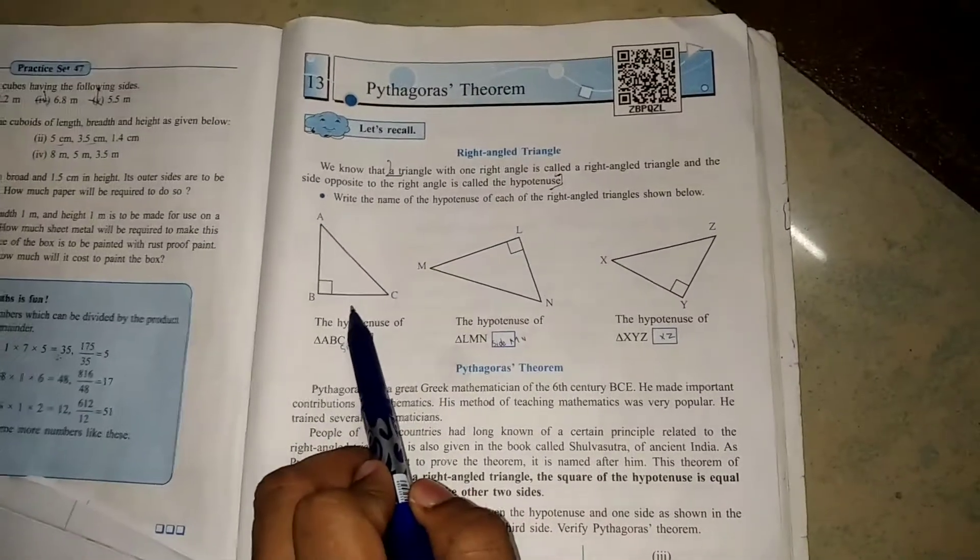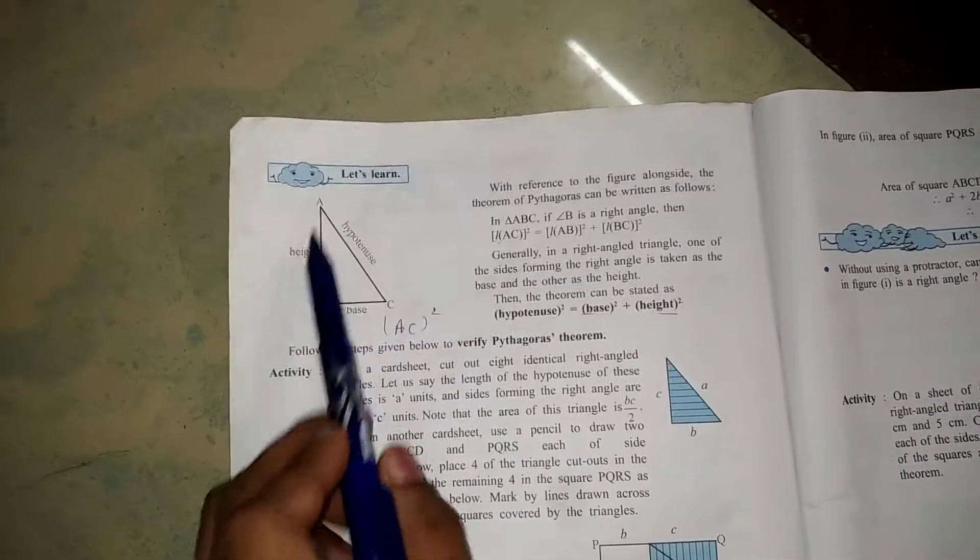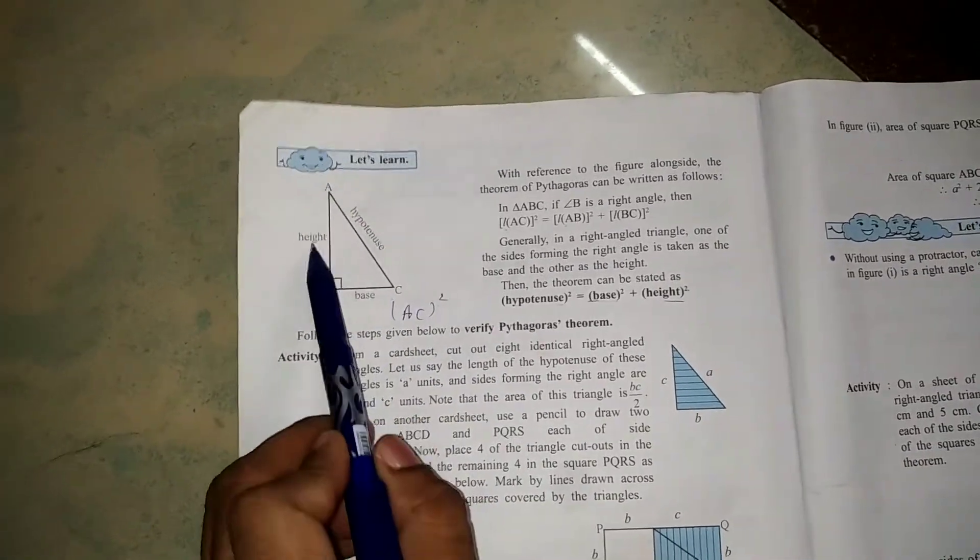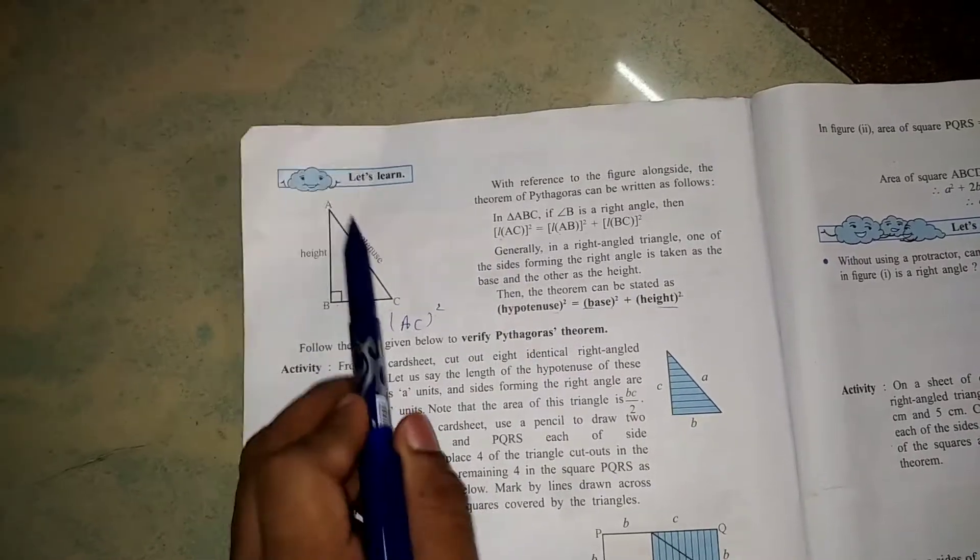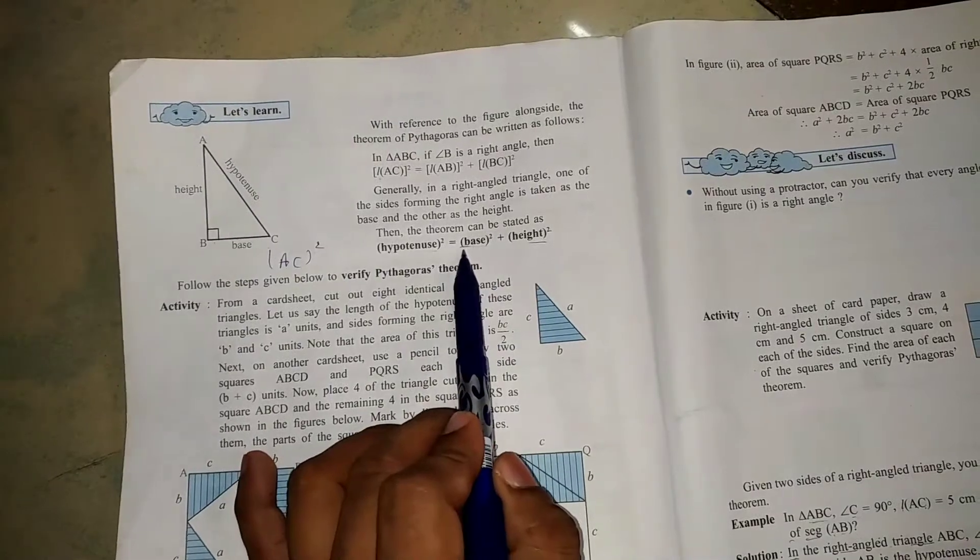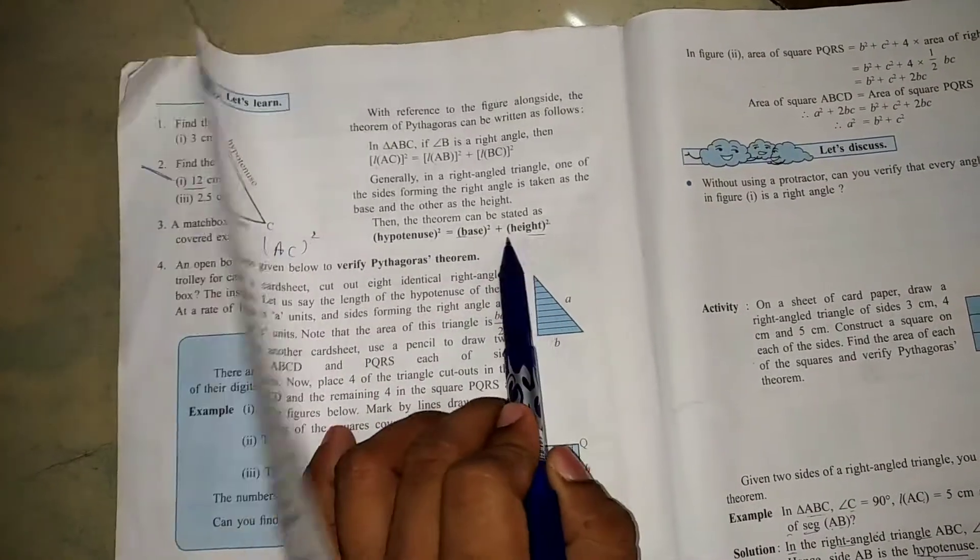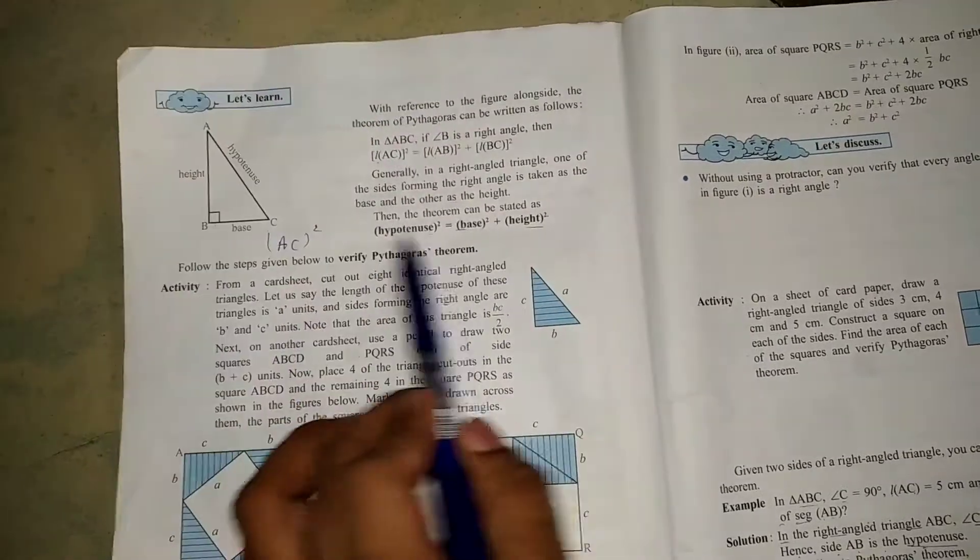There is the formula to understand this angle. A and B and C means this is your height, this is your base, and this is your hypotenuse side. The formula is hypotenuse square equals base square plus height square. Remember this formula.